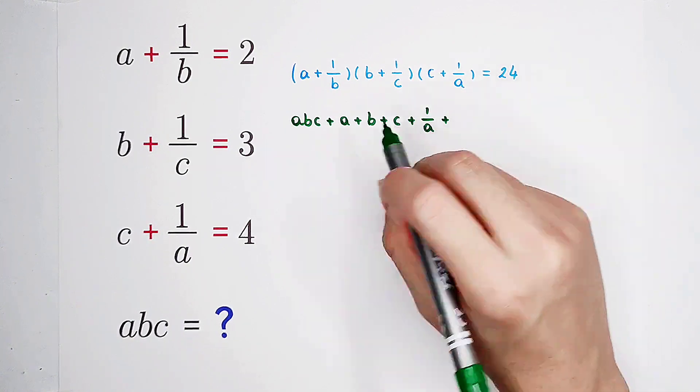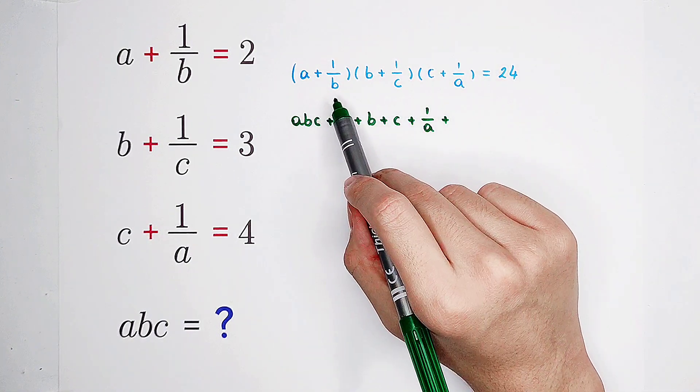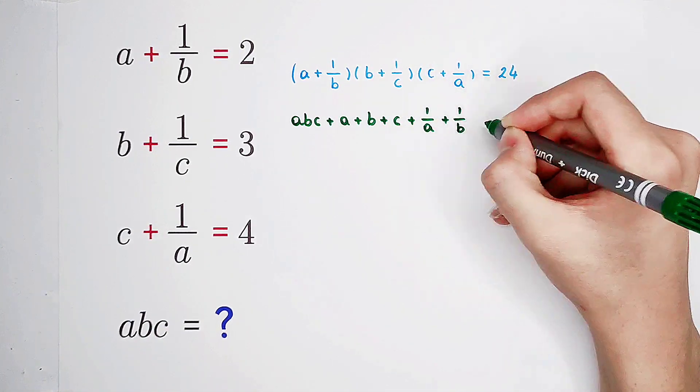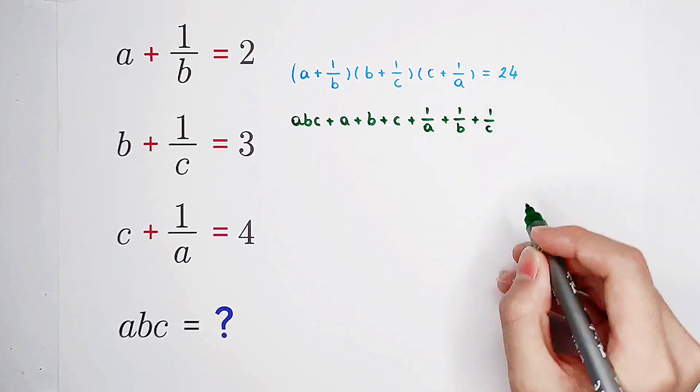The same way, one over b times one over c, then times c, we have one over b, then we have one over c as well.